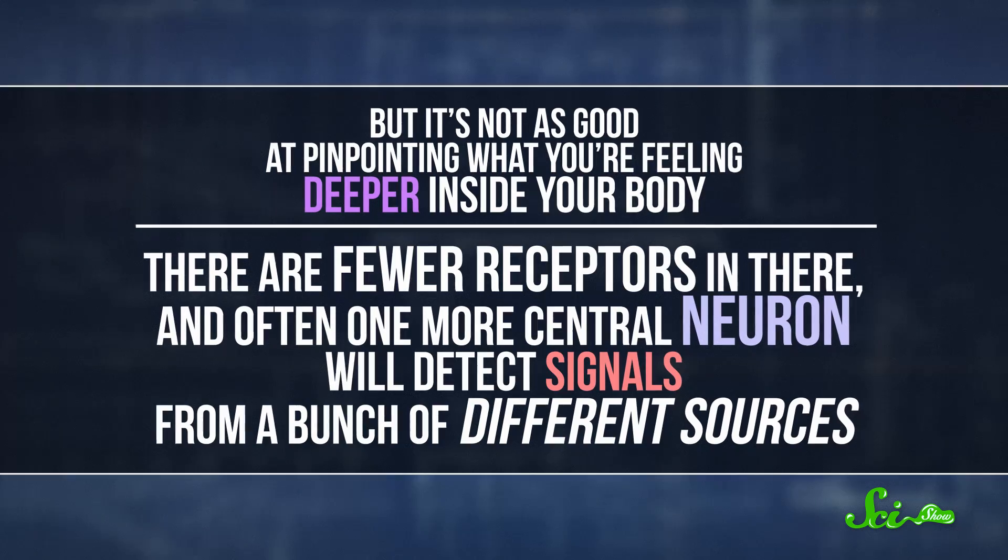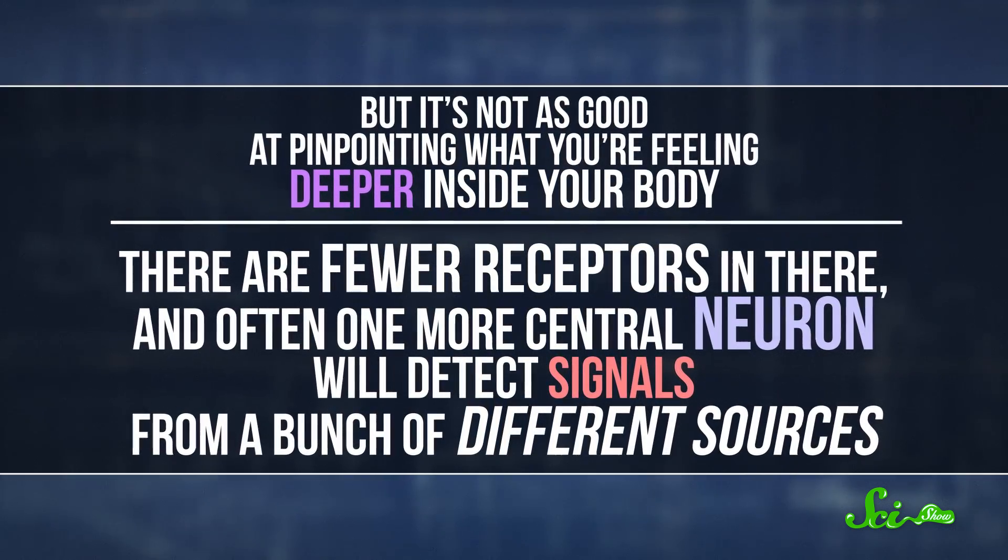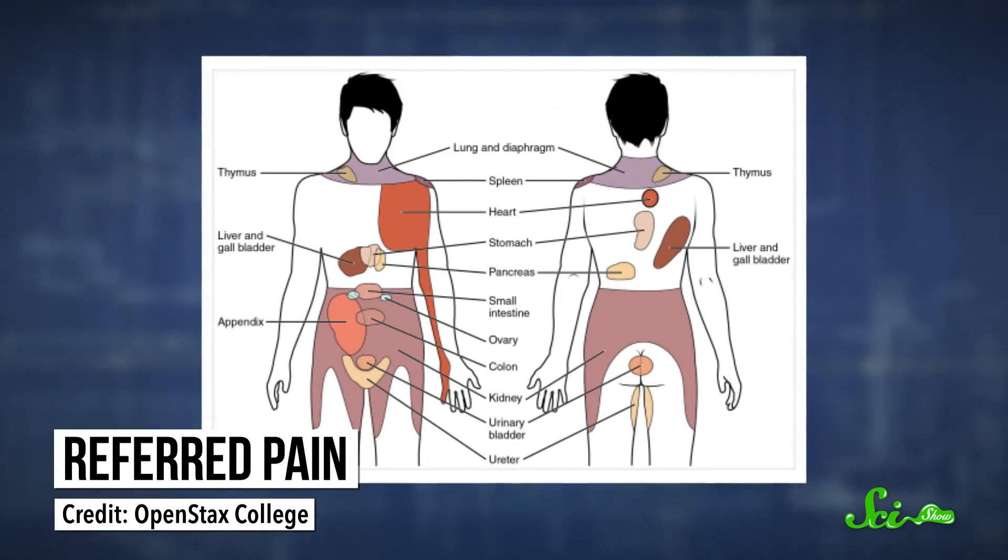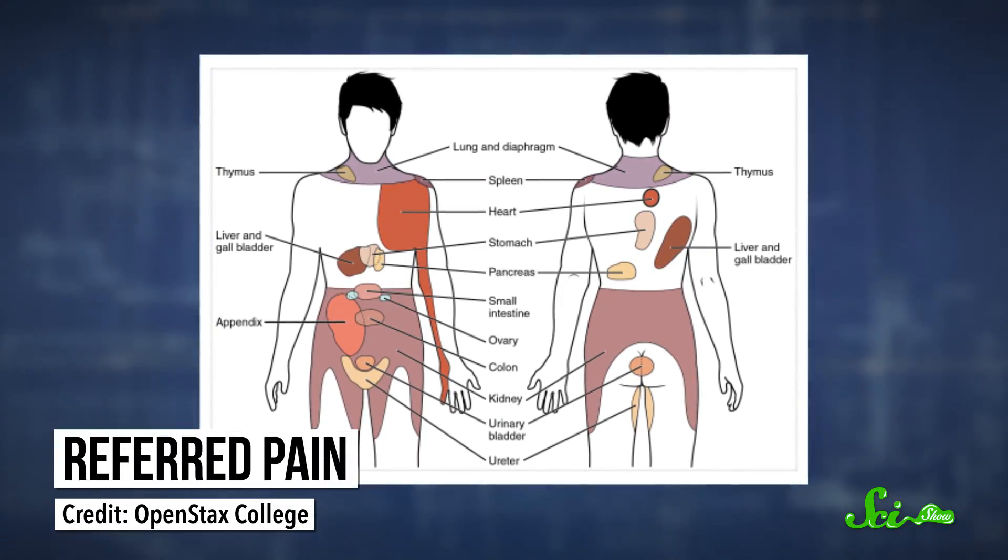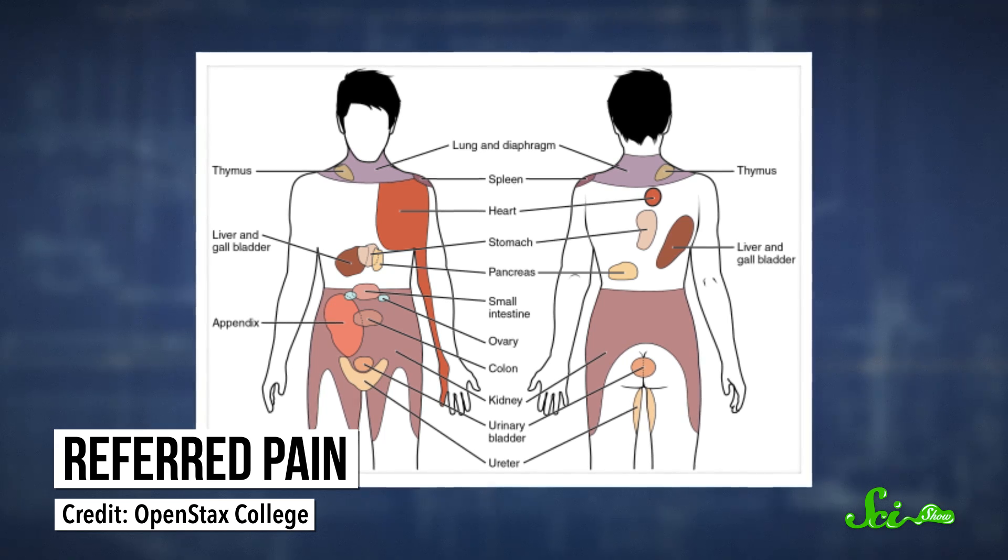There are fewer receptors in there, and often one more central neuron will detect signals from a bunch of different sources. All your brain knows is that you were hurt somewhere in a certain area of your body, so it just tells you that the whole area hurts. Referred pain will often spread through the area controlled by the same part of the spinal cord, but it can spread farther than that if the pain is bad enough, like if someone's nuts are being crushed by a foot.